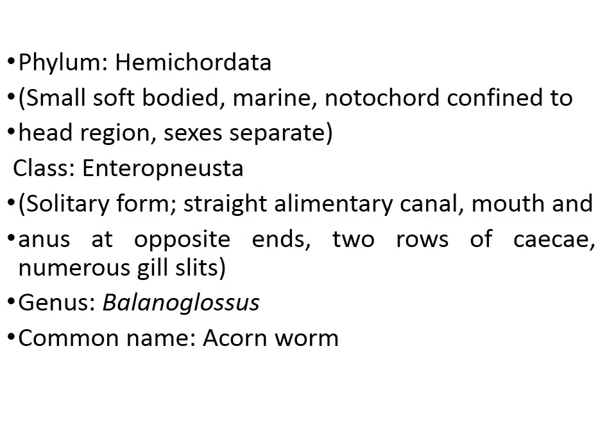Phylum Hemichordata includes small soft-bodied marine organisms known as Balanoglossus. They have a notochord confined to the head region, which was believed to be somewhat similar to the chordate notochord — that is the reason why it was initially included in Chordata. But later it was found that this notochord is actually a diverticulum or stomochord, which is why it is now part of non-Chordata.